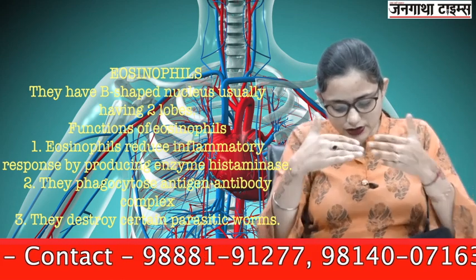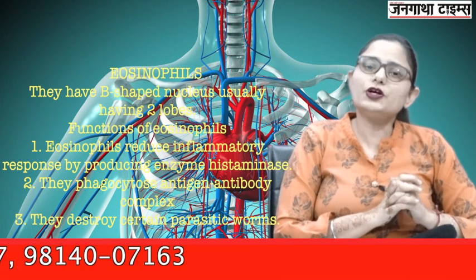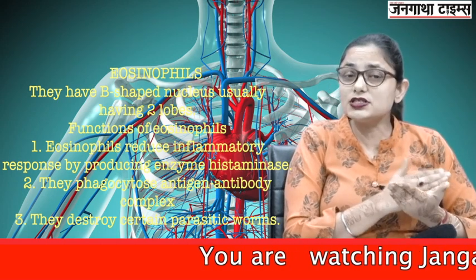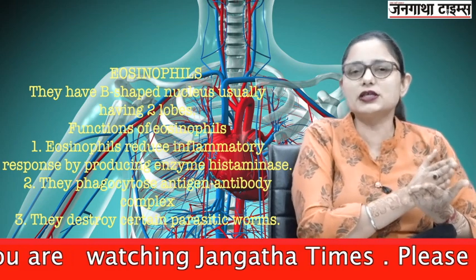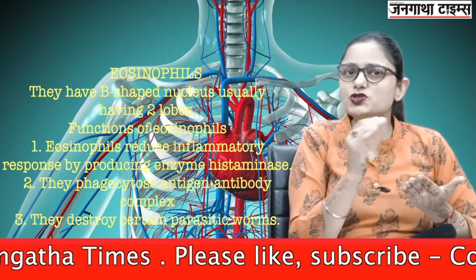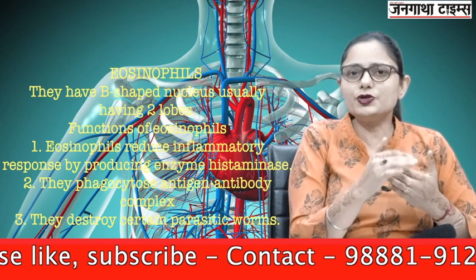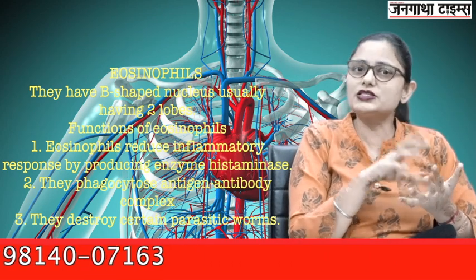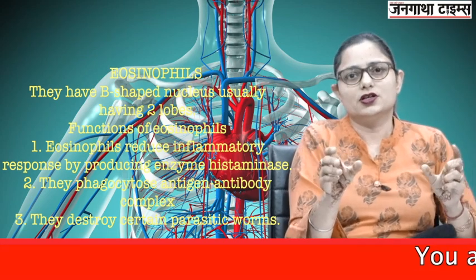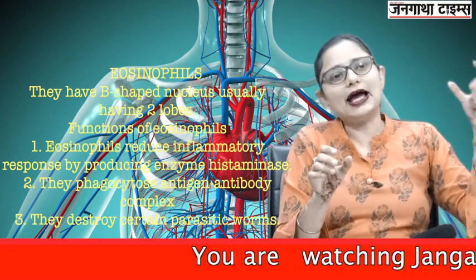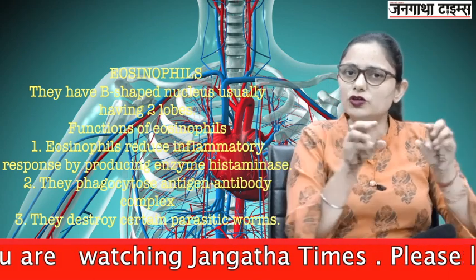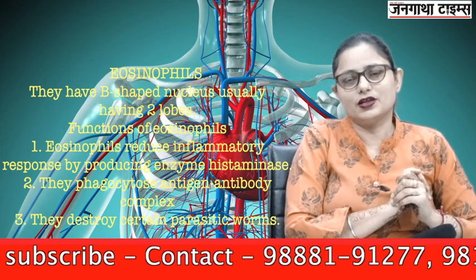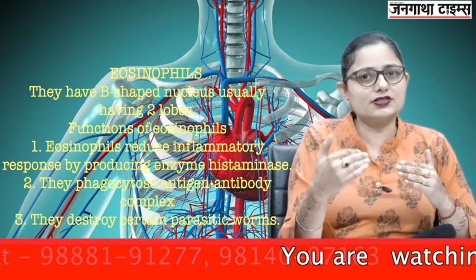Functions of eosinophils: First, they produce histaminase. Histamine is a chemical that produces inflammatory response, and histaminase reduces that inflammatory response. Second, eosinophils phagocytose antigen-antibody complexes — when a foreign antigen attacks the body, antibodies are produced and both form a complex, which is phagocytosed by eosinophils. Eosinophils also destroy certain parasitic worms.